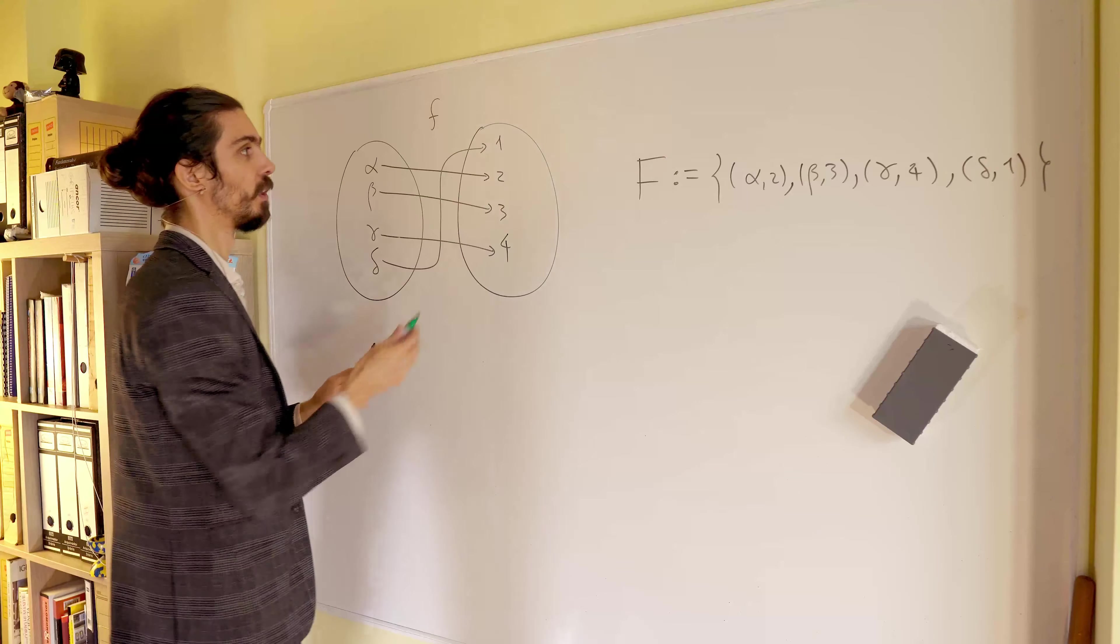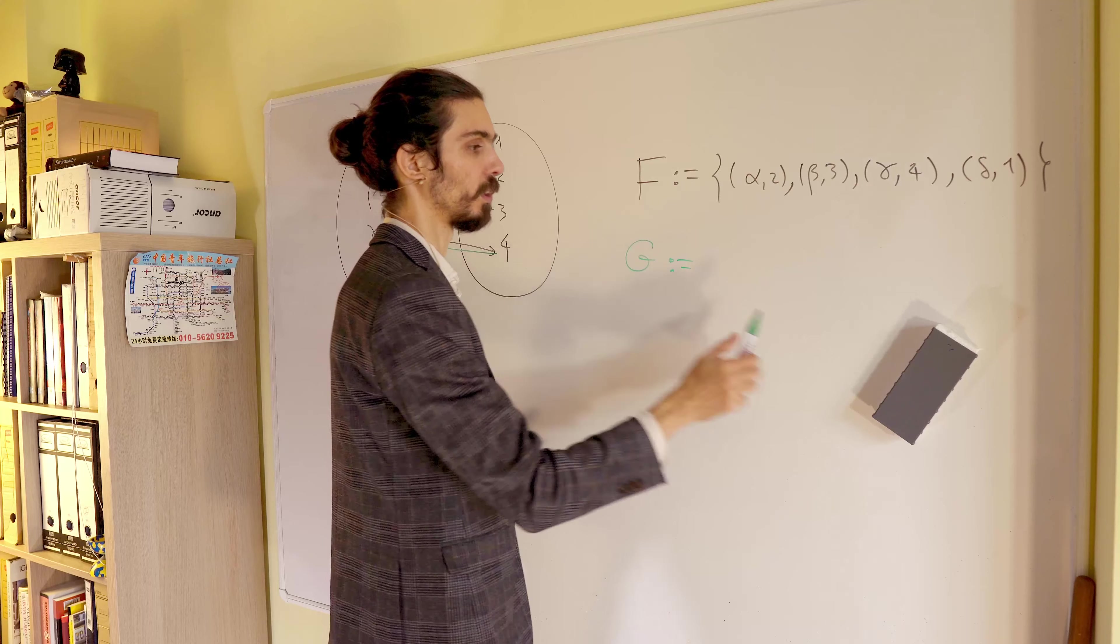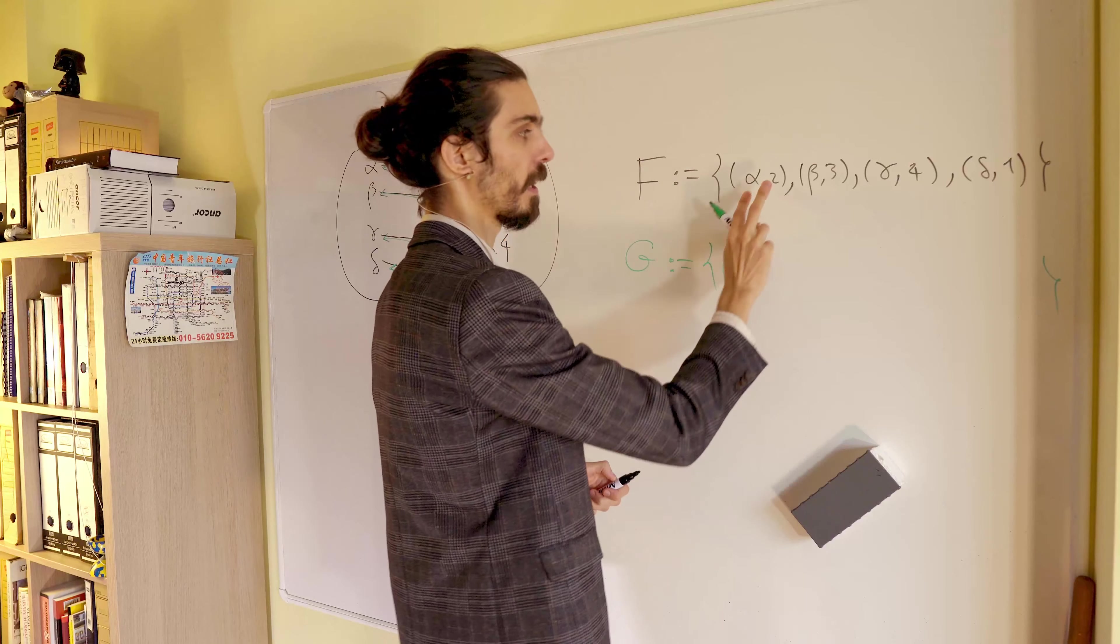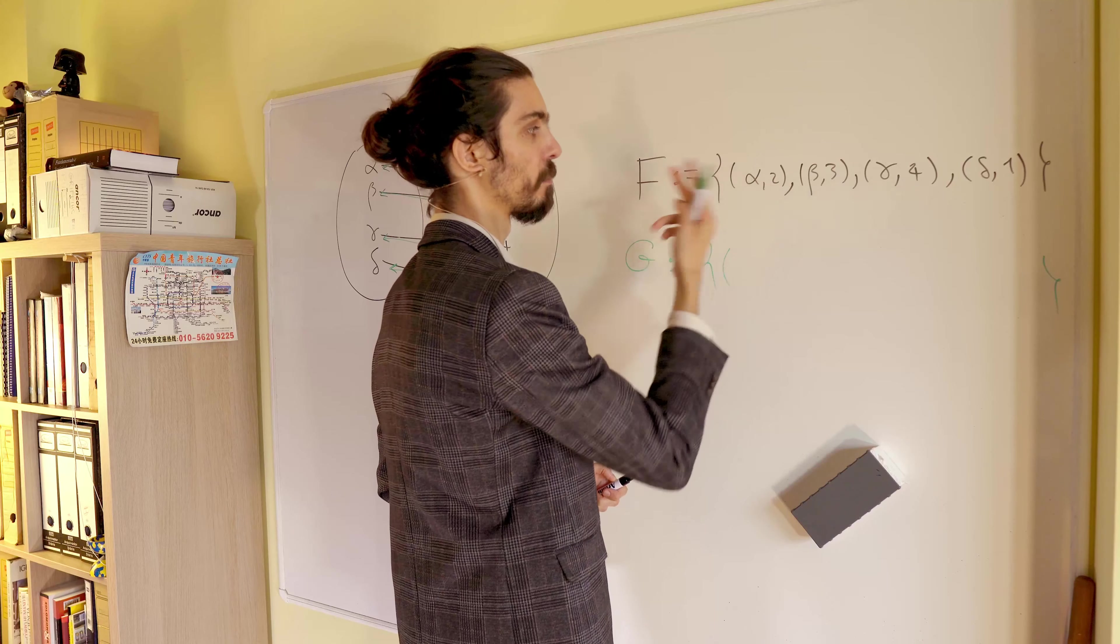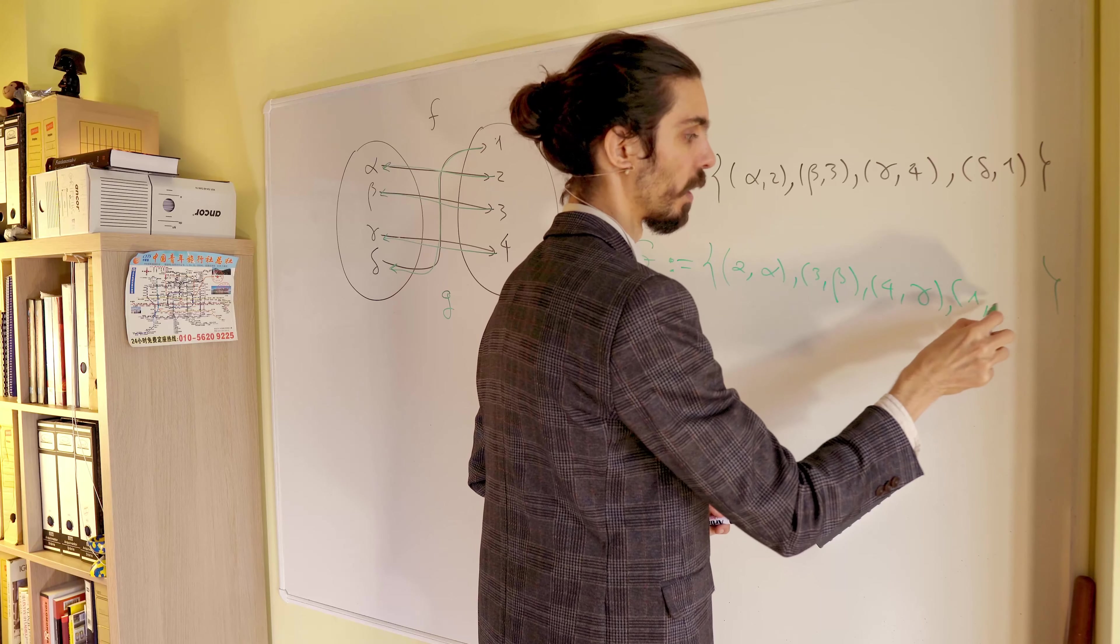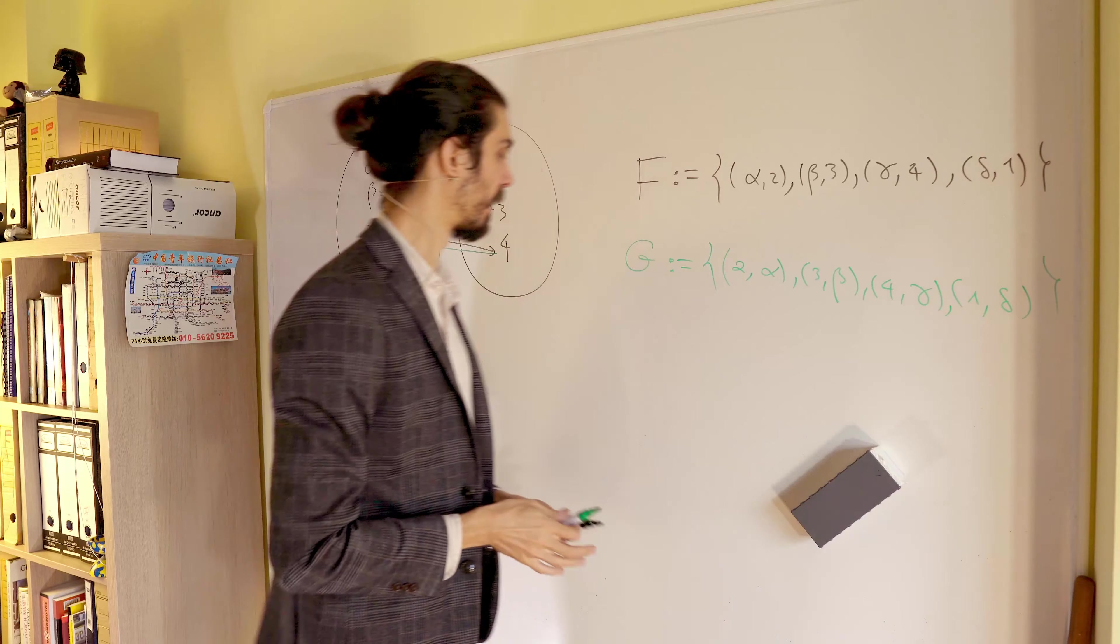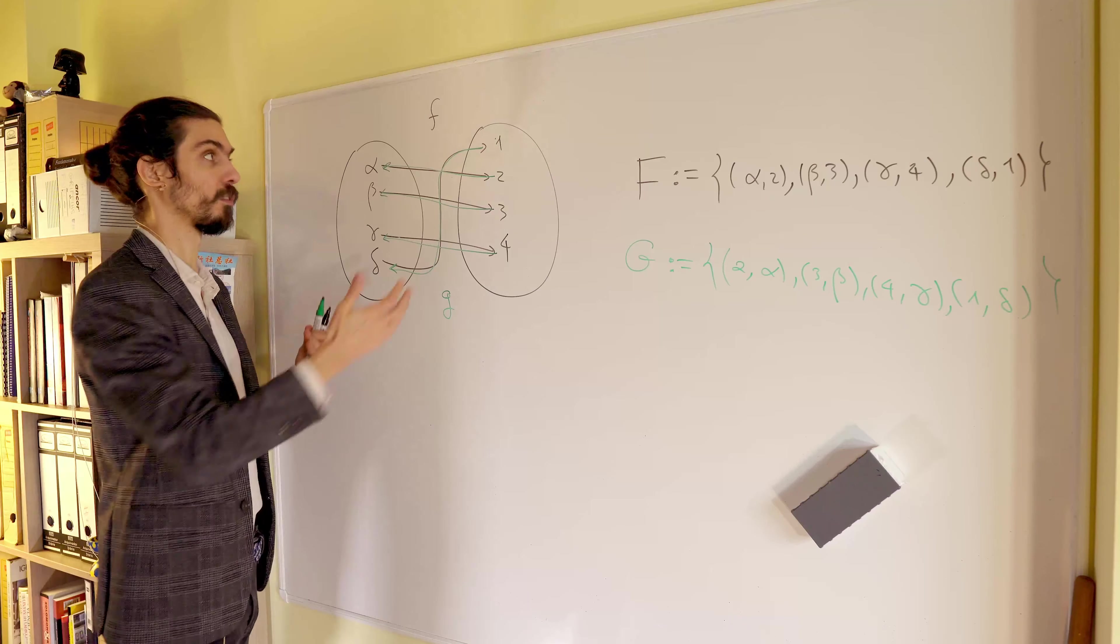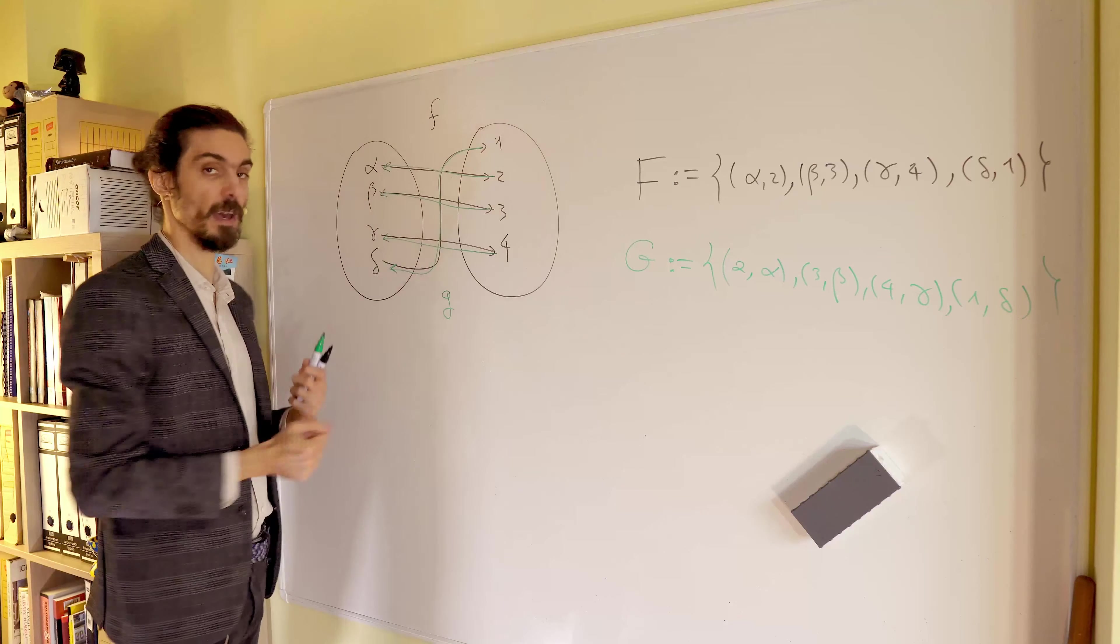Similarly, we can define the relation point of view for g, which is the following list of ordered pairs. We just flip the entries. So you get 2 alpha, and then 3 beta, 4 gamma, and finally 1 delta. And again, we have a new function, which we call the inverse function of F, and from the two points of view.